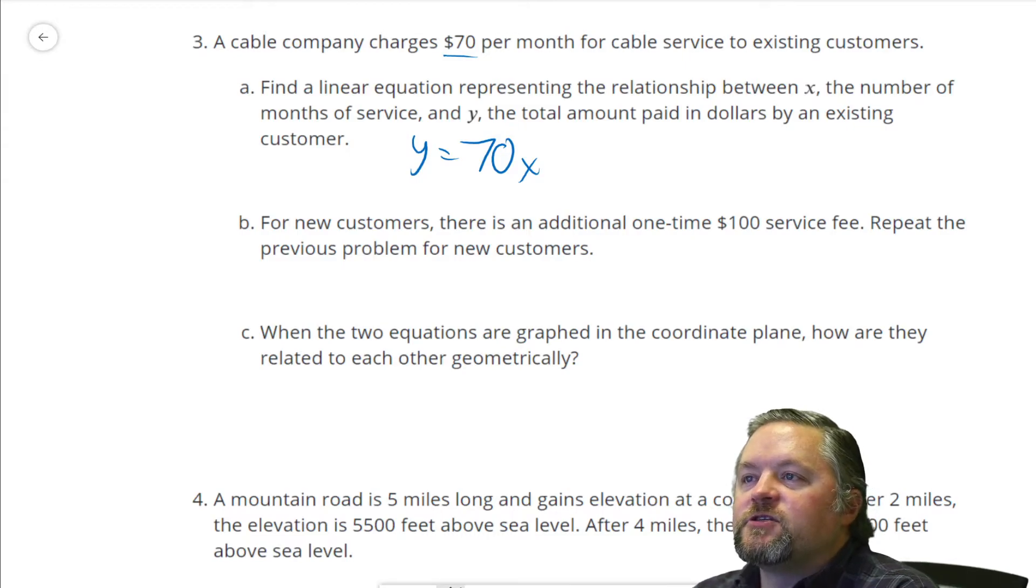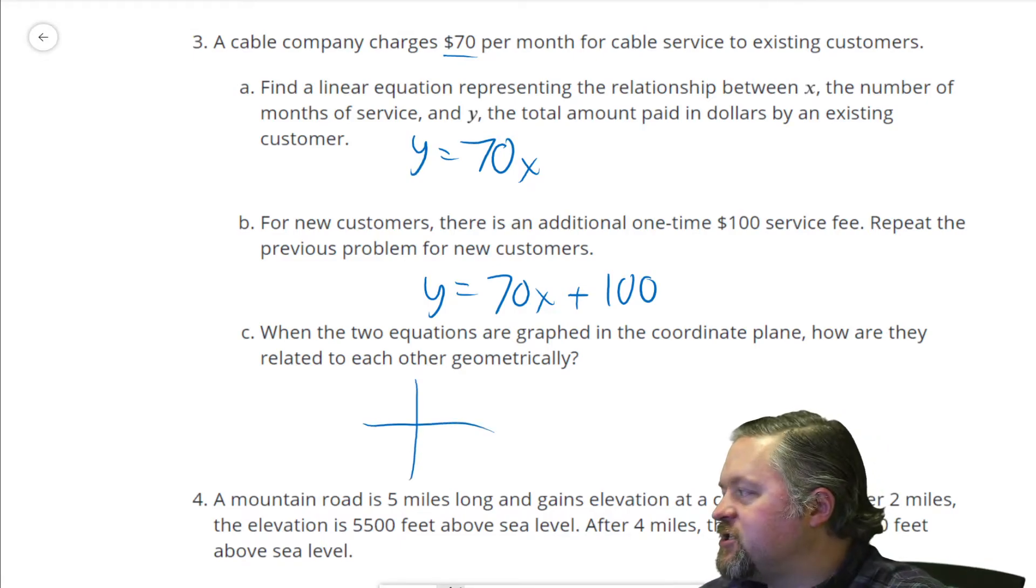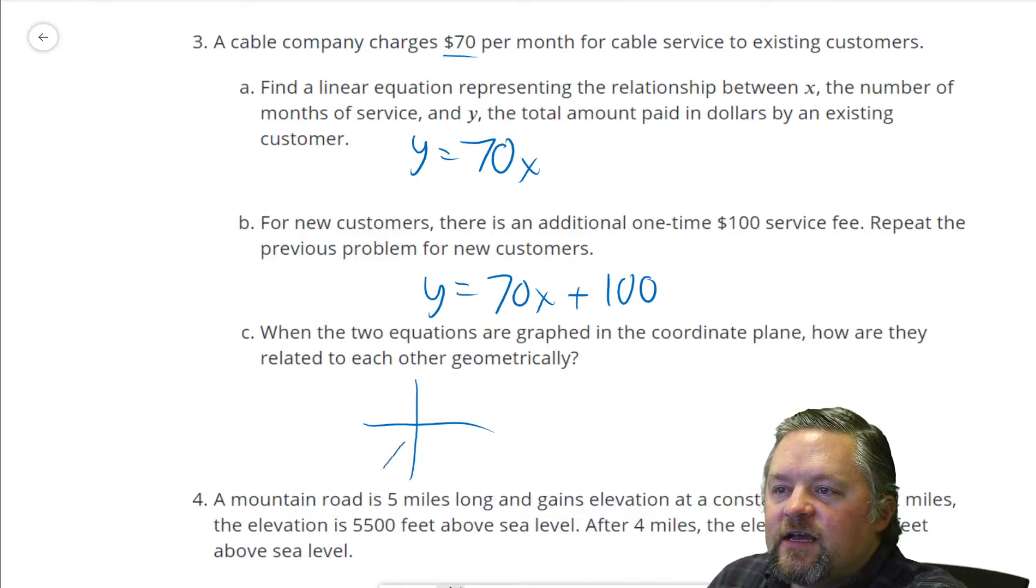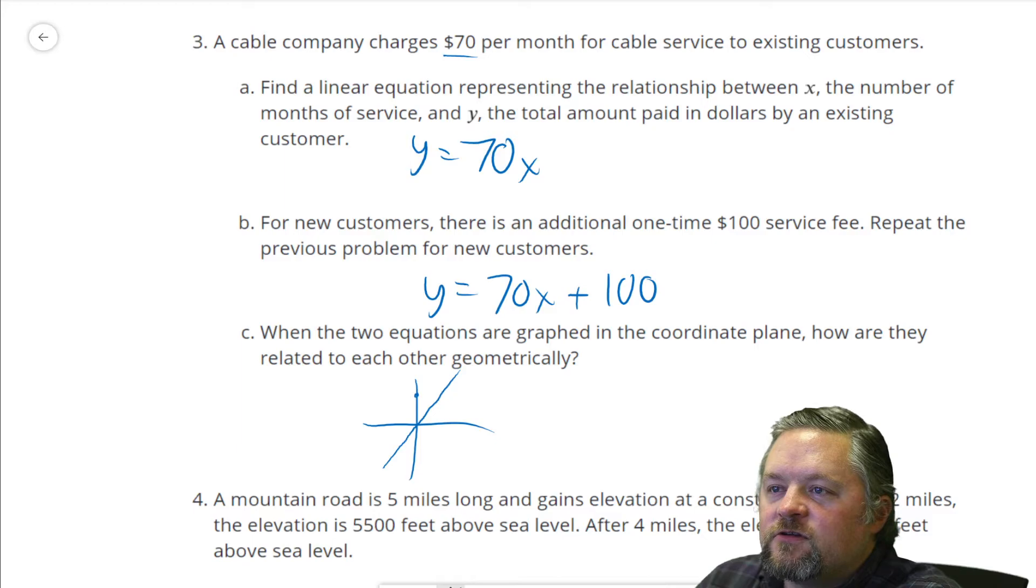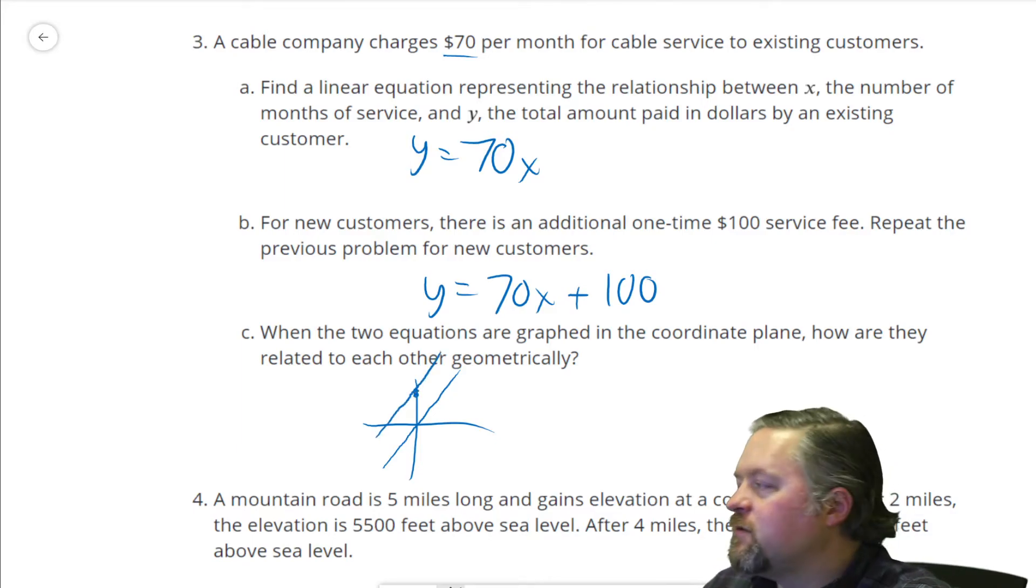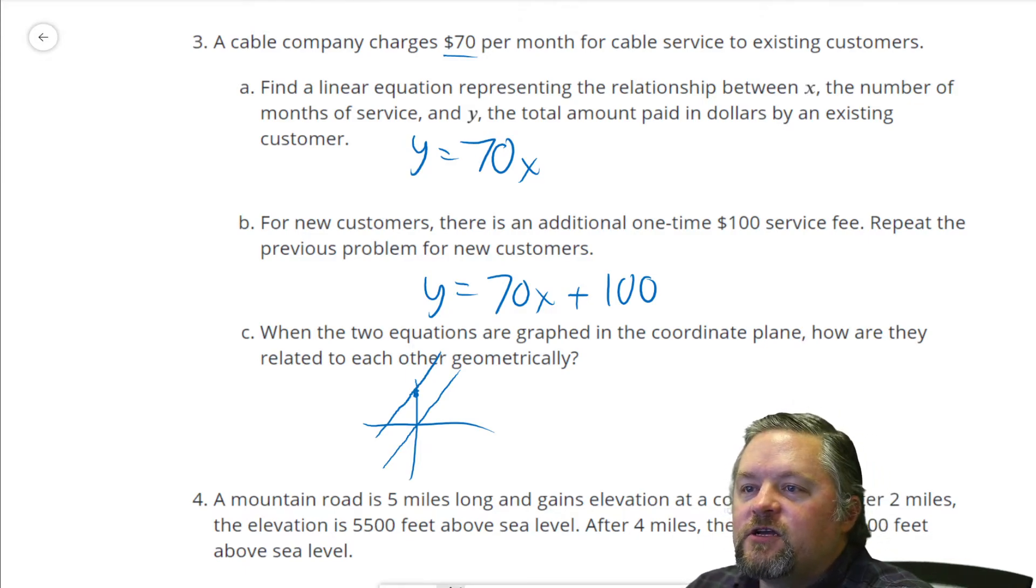For new customers, there's an additional one-time $100 service fee. Repeat the previous problem for new customers. So, y equals 70x, because the amount per month is the same. Then you have to add on a $100 service fee. When the two equations are graphed in the coordinate plane, how are they related to each other geometrically? Well, let's quickly just sketch out what these are going to look like. y equals 70x, that's going to be pretty steep. Goes through 0, 0. The second one here, though, is y equals 70x plus 100. So, we're starting at $100, but we're going to have the same slope. So, it's going to look kind of like that. How are they related to each other? They are parallel.